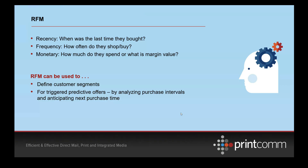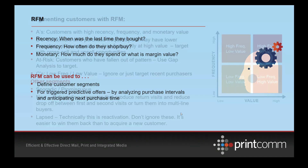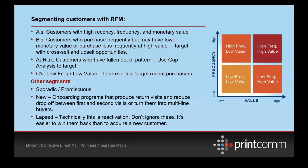Timing is a giant impactor on performance. If the right offer shows up at the right time to the right person, your chances for success are optimized. You can send the right offer to the right person but not at the right time, and it probably isn't going to work as well. Looking at this graphic on the right, there are two axes: a value axis and a frequency axis.